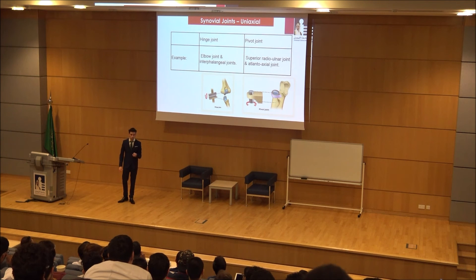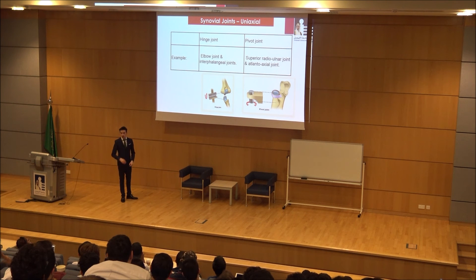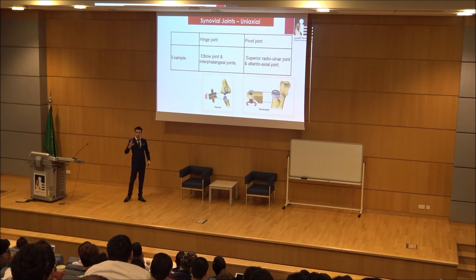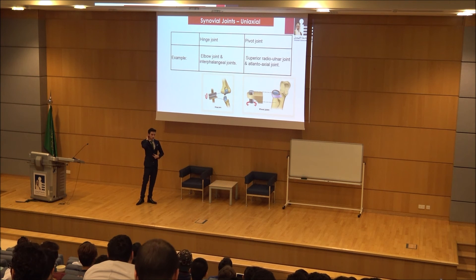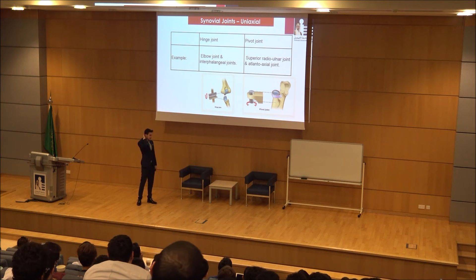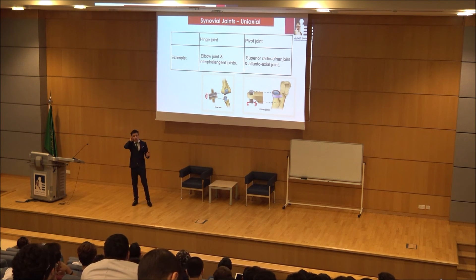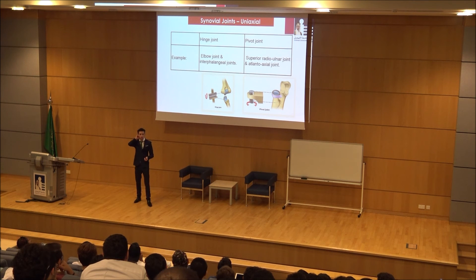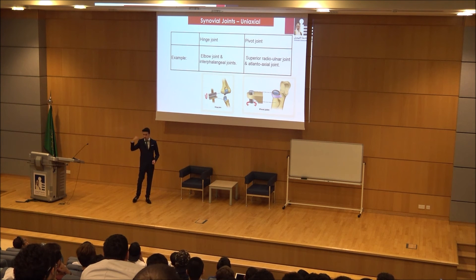The atlanto-axial joint is in the cervical area. Cervical means related to the cervix, which means neck. C1 is called the atlas bone, and C2 is called the axis bone. The joint between them is a synovial pivot joint.